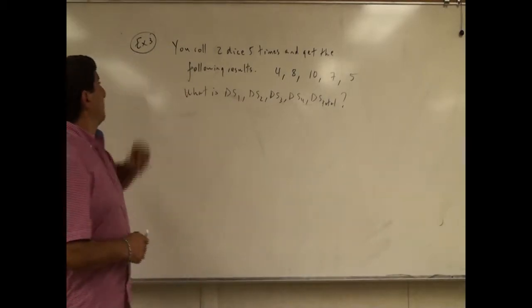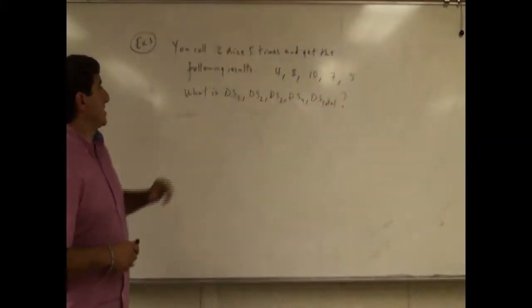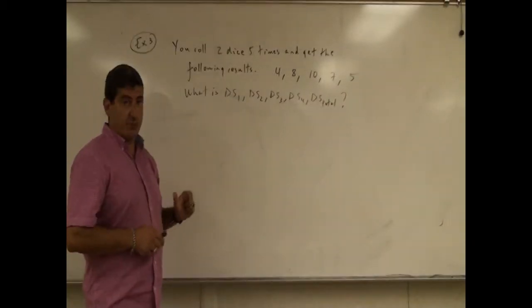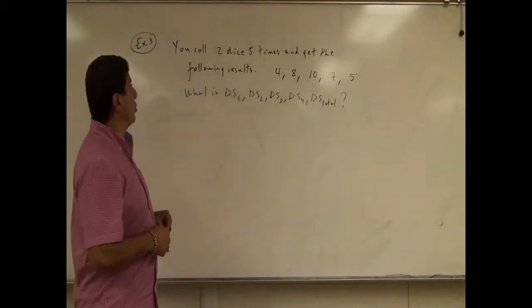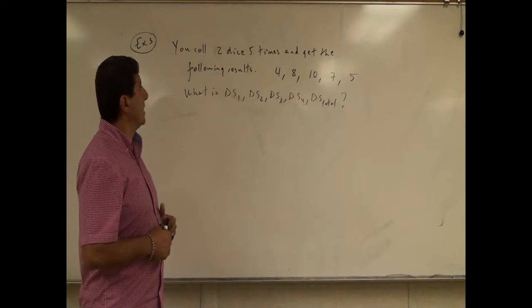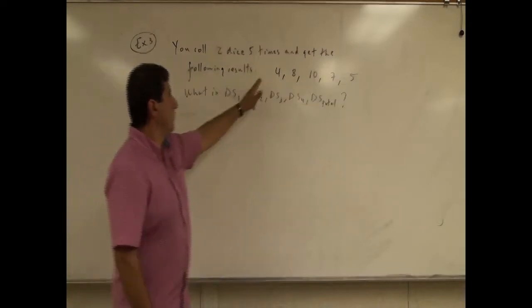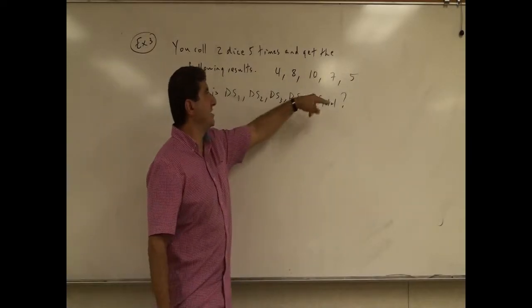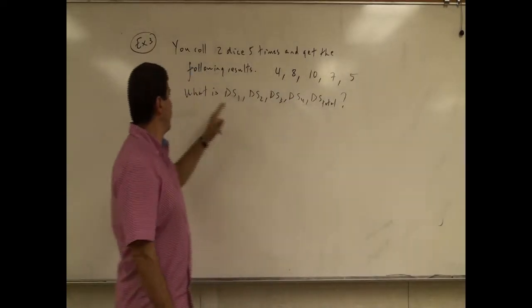Welcome back. Now come to example 3. This is going to be a dice problem. It says you roll two dice five times and get the following results: 4, 8, 10, 7, 5.